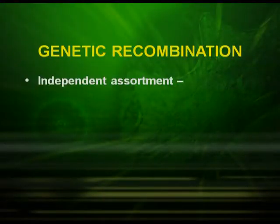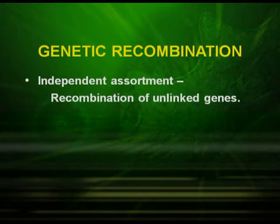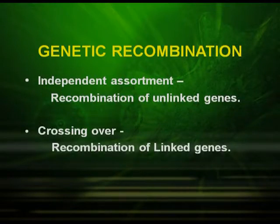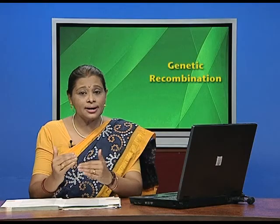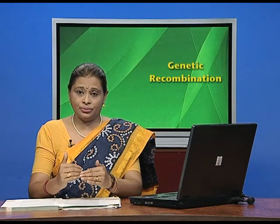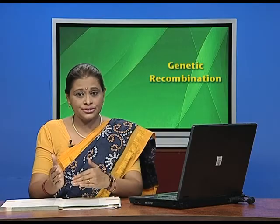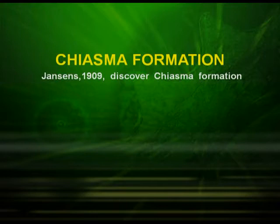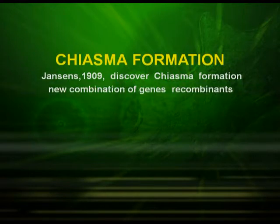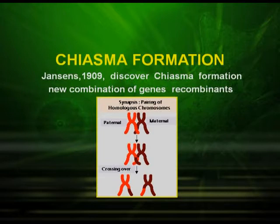After crossing over, we come to another important aspect — genetic recombination. Genetic recombination can occur in two ways: one is independent assortment, which is the recombination of unlinked genes; and the other is crossing over, which is the recombination of linked genes. Janssen in 1909 discovered chiasma formation during prophase 1 of meiosis 1, and the new combinations of genes produced were called recombinants. As you can see in the picture, the homologous chromosomes come together and crossing over takes place between two non-sister chromatids.